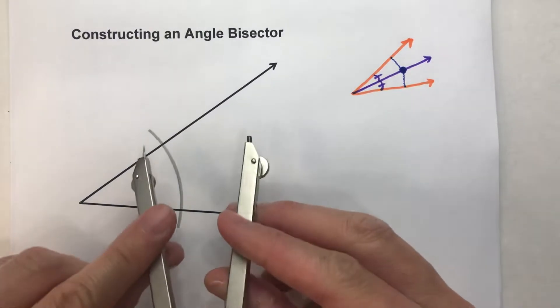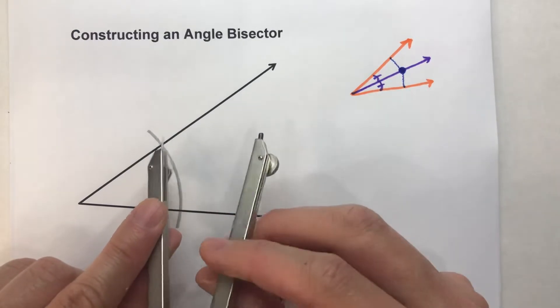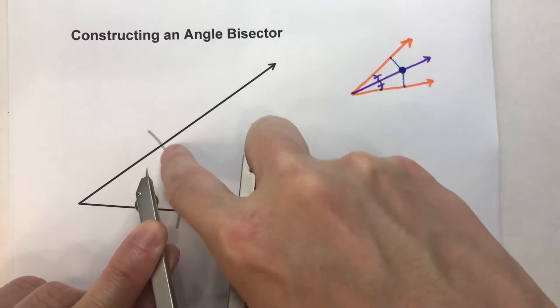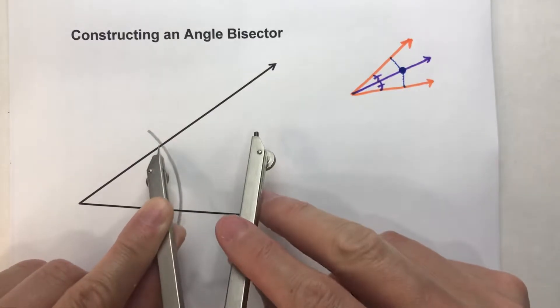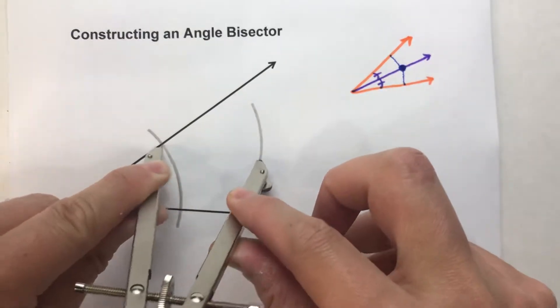So what I'm going to do is have a compass setting and it doesn't matter what compass setting it is at this point, but off of where the arc intersects the side of the angle, I'm going to swing another arc out here.